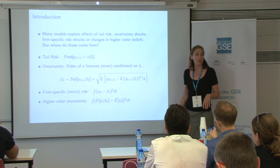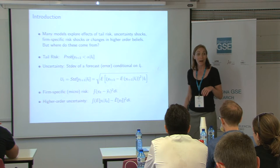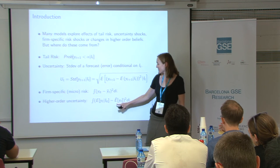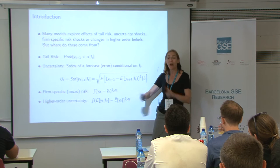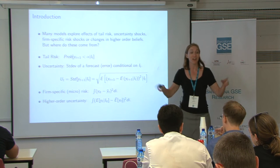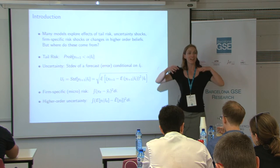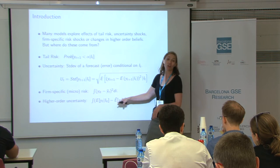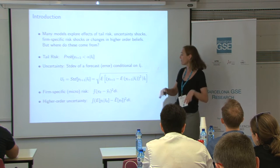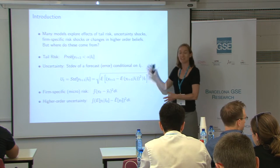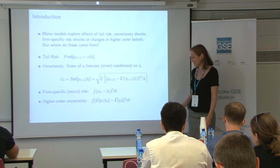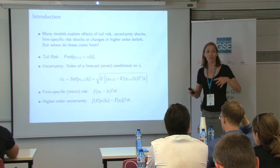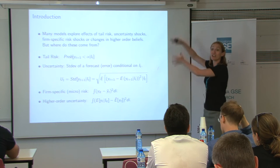Lastly, higher order uncertainty — the basis of theories of sentiment shocks — is about how uncertain am I about what you believe, or how different are our expectations about future outcomes. We're using uncertainty for a lot of different terms in this literature. We could have very little disagreement and have very low higher order uncertainty because all of the data in the world is public. But we could be really uncertain about tomorrow's outcome, and firms could be really different. But I'll show you that they do tend to move together — there's a reason we put one word on all of these things.